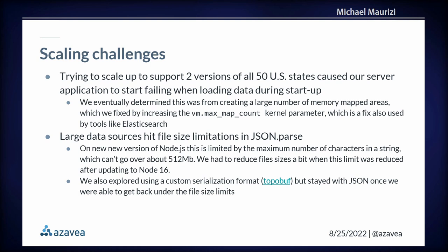One of the big deadlines was responding to the new data from the 2020 U.S. Census, since redistricting is done based on new census data. We started with 2010 data and then scrambled to add more states when the 2020 census data was released — but this caused our server to crash on startup. It turned out we had to increase a kernel parameter because we were loading so much data at application startup that we ran out of memory mapped areas. I had never heard of this before, but apparently other tools that load a lot of data into memory — like Elasticsearch — often run into this.